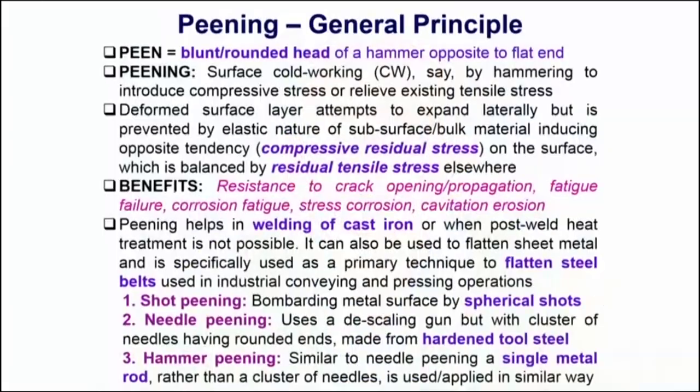We may broadly classify the entire gamut of surface engineering into two major groups: conventional surface engineering, which involves very age-old, well-established practices still widely used because they are economical, easy to implement, and have large utility in manufacturing. We will also discuss advanced surface engineering techniques, which could be thin-film based or use direct energy beams. To begin with conventional practices, the first technique we discuss today is called shot peening.